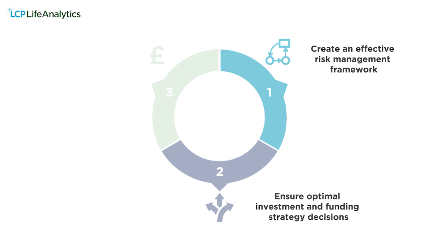It can help you to make better investment and funding decisions. For example, by considering longevity hedging options such as buy-ins and longevity swaps alongside other investment choices, you'll be able to readily see which de-risking options offer you the best bang for buck. The conclusion might be to hedge longevity, or it might simply be to confirm that it's more efficient to address other risks first. Either way, you will have the confidence that the decision made is optimal and remains optimal over time.